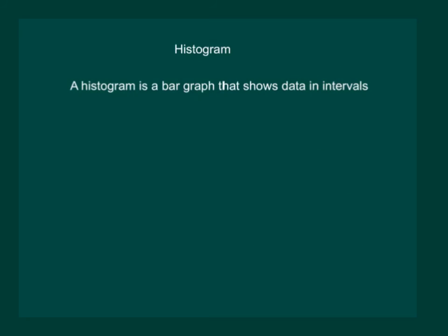Histogram. A histogram is a bar graph that shows data in intervals. There are no gaps between the bars because there are no gaps between the intervals. Let us consider an example. Suppose we conduct a survey in a town and try to find out the comparison between the weights and the number of children who fall in that weight.